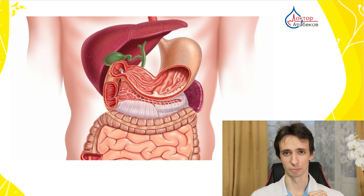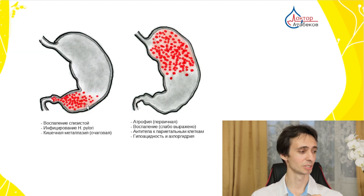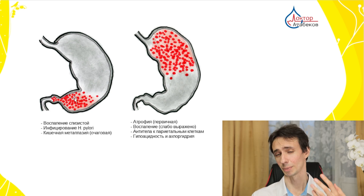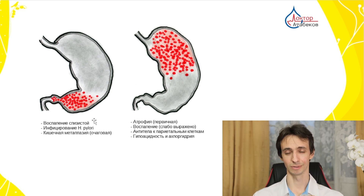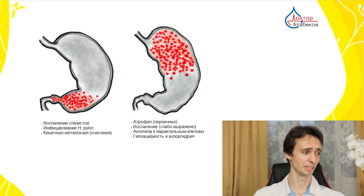This is the second form of gastritis — it can be called environmental gastritis, caused by other factors such as Helicobacter pylori. Helicobacter pylori lives in the pyloric region, causes inflammation and atrophy, and over years this inflammation progresses and spreads to the entire stomach, though it usually starts in the pyloric region.